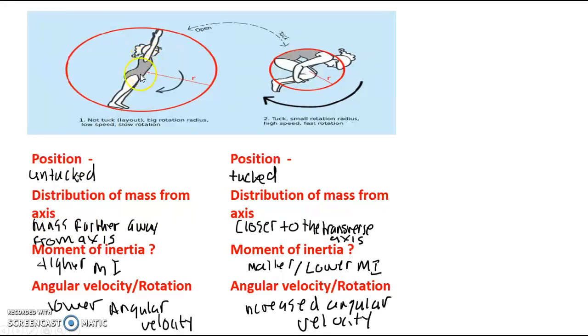So the mass there, if you look at the mass going all the way across, further away from the axis, and that straight away increases the moment of inertia. That increases that resistance to rotate.